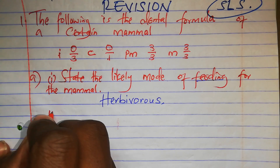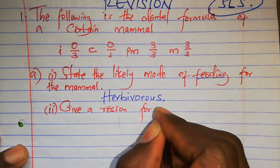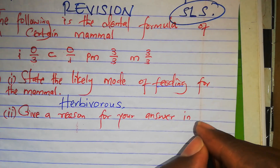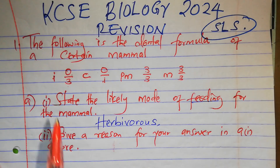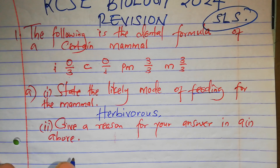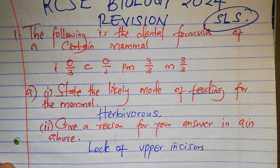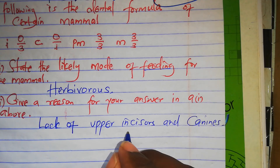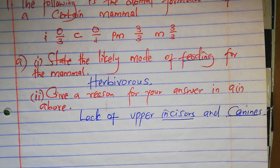Give a reason for your answer. The reason is drafted from these zeros you see here. These zeros indicate lack of upper incisors and canines — that is the reason. They lack upper incisors and canines. And actually that is where we will find not the diastema but the horny pad. You will learn about it in our subsequent videos.